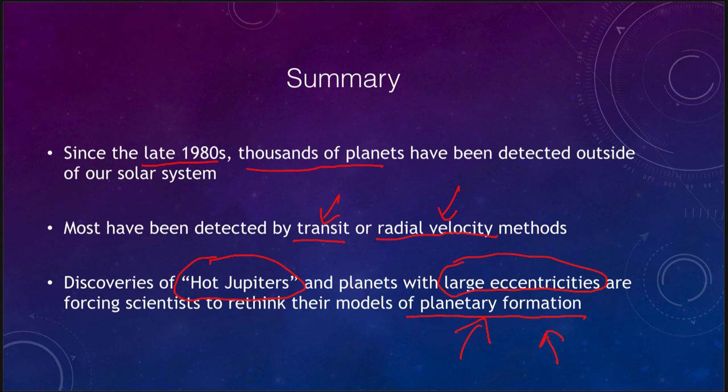So our solar nebula theory may need some modification to be able to explain how solar systems formed. Remember, our solar nebula theory was based on our solar system. We didn't know of any others at the time. Now as we start to see more, we have to get enough statistics to find out whether these are the common solar systems, or whether these are the rare exceptions that just happen to be a lot easier to detect.